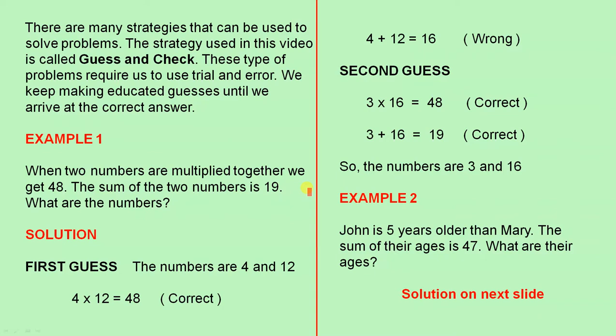Here's the first example. When two numbers are multiplied together, we get 48. The sum of the two numbers is 19. What are the numbers?